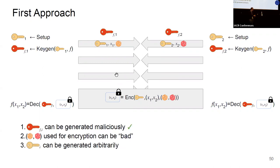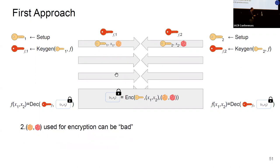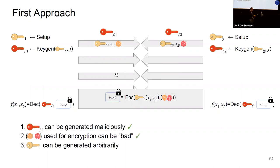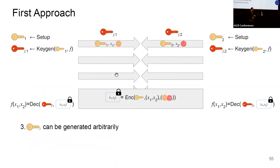The second issue — the concatenation of randomness — is solved by letting both parties input longer random strings into the MPC protocol and XOR-ing them together. As long as one of these strings is random, everything is fine. The third issue requires a bit more work.